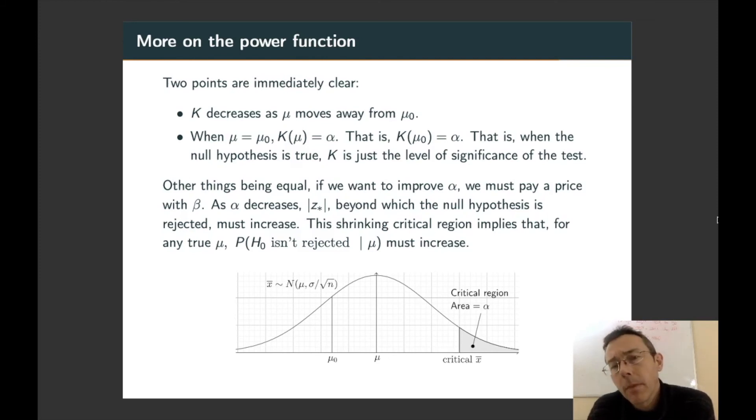So what if we change the significance level? What effect does that have on beta? Well, if you're decreasing the probability of a type 1 error, it's not surprising that you're going to increase the probability of a type 2 error. As alpha decreases, the absolute value of z-star, the distance of that critical value from z equals 0, is going to increase. And so that's going to decrease the critical region.